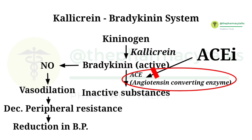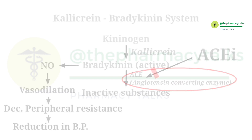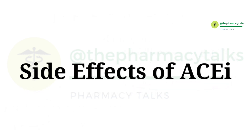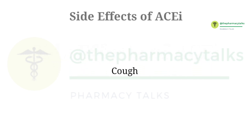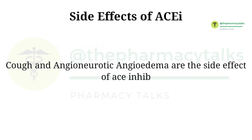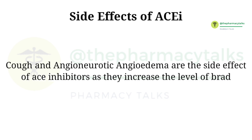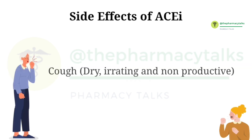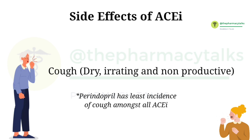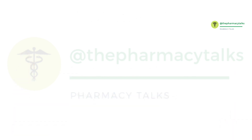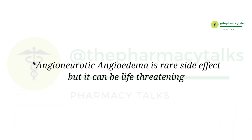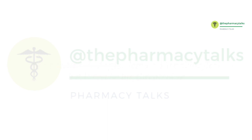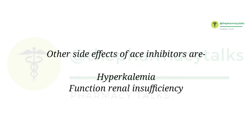This is how ACE inhibitors work in the body through their dual mechanism of action, helping in controlling blood pressure. Regarding side effects: cough and angioedema are side effects of ACE inhibitors as they increase the level of bradykinin. Dry, irritating, and non-productive cough is the most common side effect. Perindopril has the least incidence of cough amongst all ACE inhibitors. Though angioedema is a rare side effect, it is life-threatening. Other side effects include hyperkalemia and functional renal insufficiency.